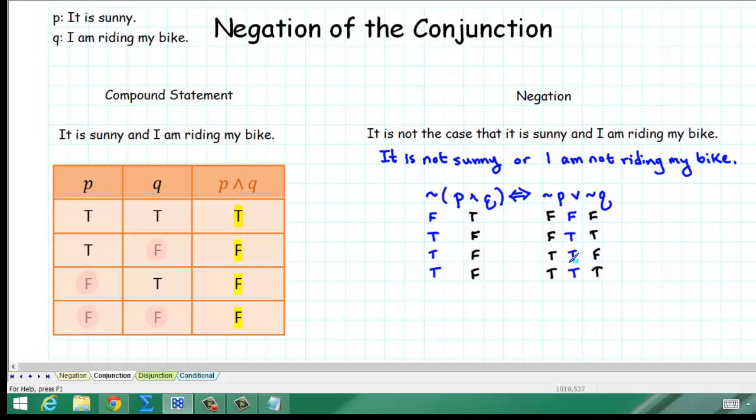So, we compare our two columns. We see that they are identical. That proves that these two statements are equivalent. So, to find the negation of a conjunction, we essentially distribute the negation symbol through the parentheses. The negation of P is not P. The negation of AND is OR. And the negation of Q is not Q.